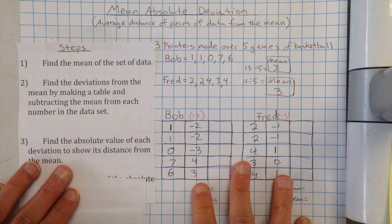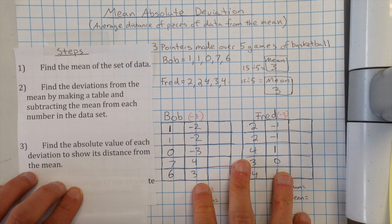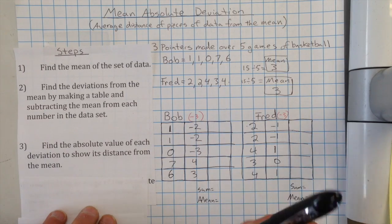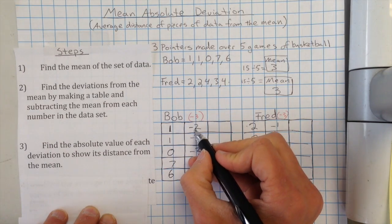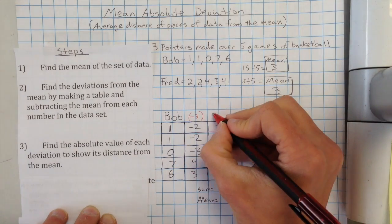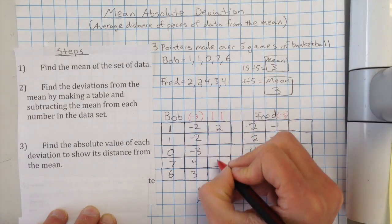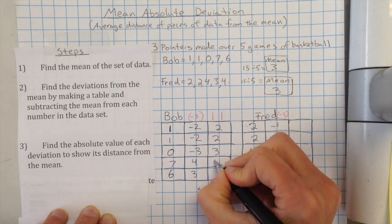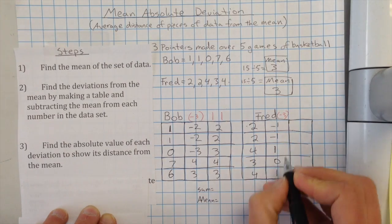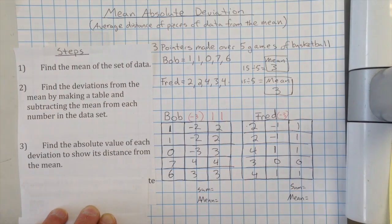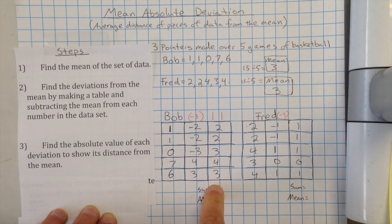Now the next thing is where the absolute term comes from. Remember, absolute means absolute value. So we're going to find the absolute value of each deviation to show its distance from the mean. So I'm going to find the absolute value of each of these. So this would be two. Remember, absolute value just makes it positive. Absolute value of those two lines that kind of look like this, and you put a number inside. So this number becomes positive, positive, stays positive, stays positive. Same thing over here, one, one, one, zero, one. So they're all staying, it's just we're just turning them all positive.